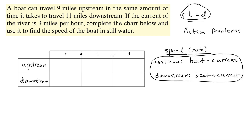So looking at this problem again: upstream, the rate is the speed of the boat minus the current. The unknown is the speed of the boat — we'll call that x. The current is given as 3 miles per hour. So upstream, the rate is x minus 3, and downstream, x plus 3.